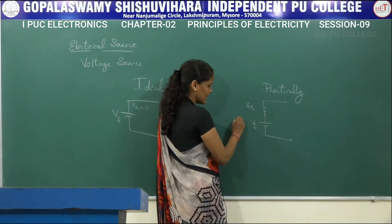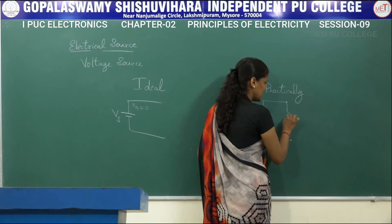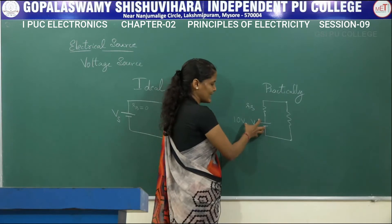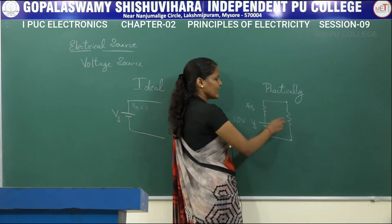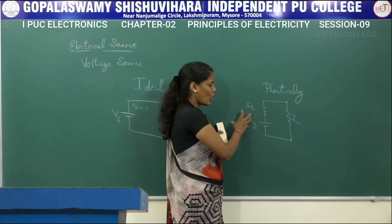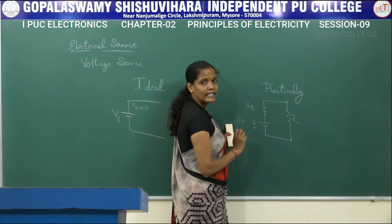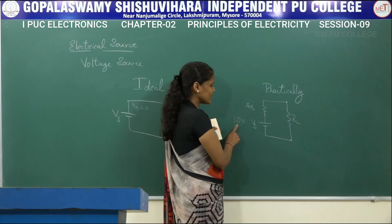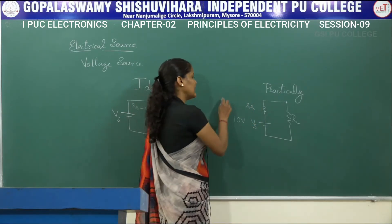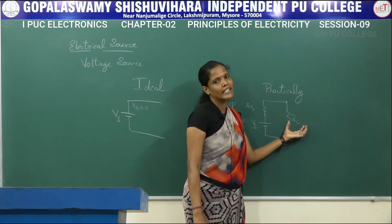For example, if the voltage source is 10 volts, when we measure the voltage at the terminals where the load is connected — the load is a component or device which consumes whatever is supplied by the source, denoted by RL — practically, whatever voltage is provided by the source will be shared by these two components, Rs and RL. That is, out of 10 volts, some voltage will be dropped across the internal resistance Rs, and the remaining voltage will appear across the load resistance RL.